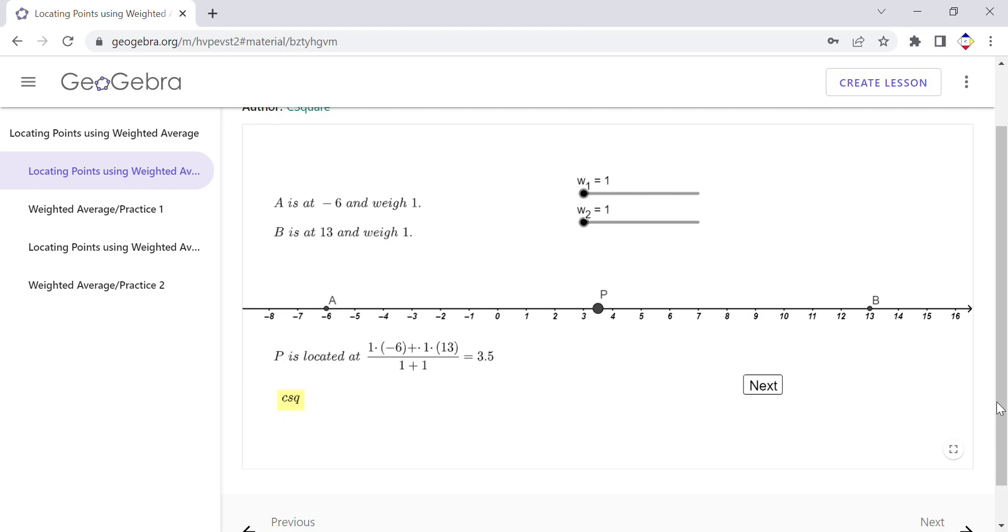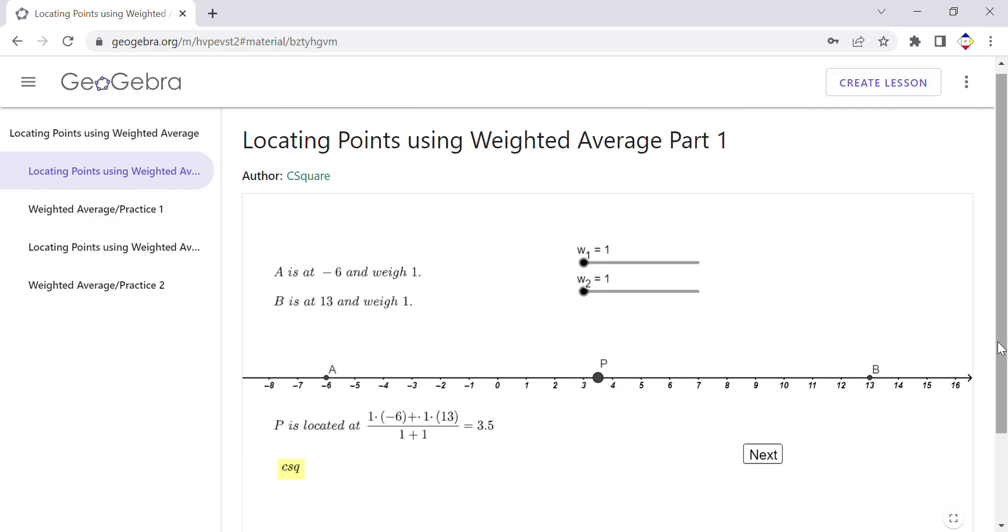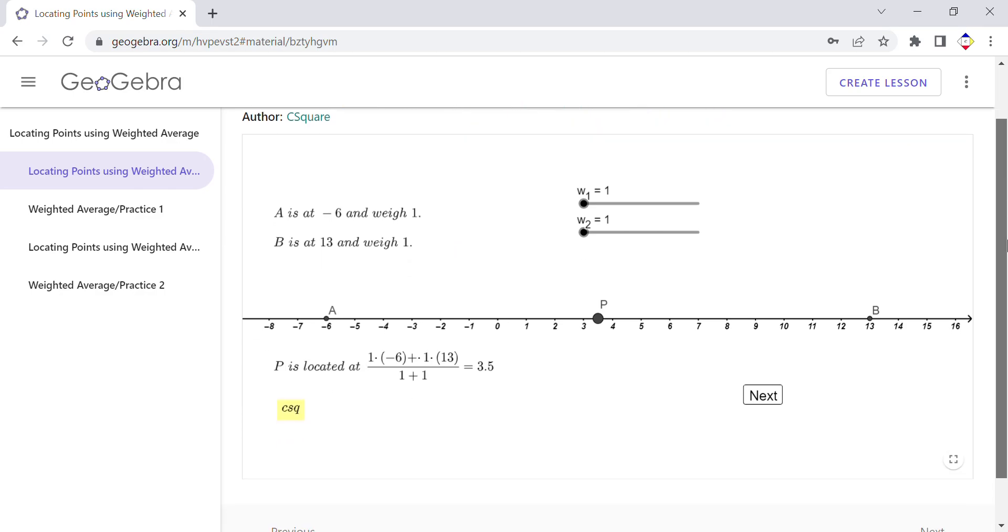Welcome or welcome back to C Square. In this video clip, I will show you how to use this GeoGebra book which is covering locating points using weighted average. It has four activities in it. The first one, which I call Part 1, shows you how to work on a number line.